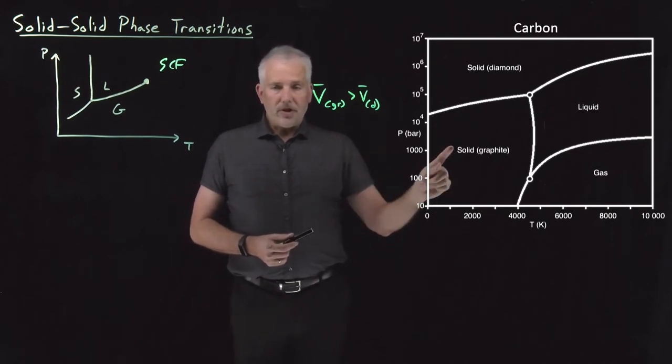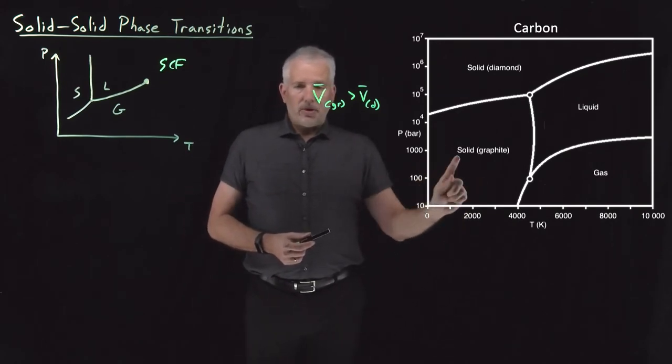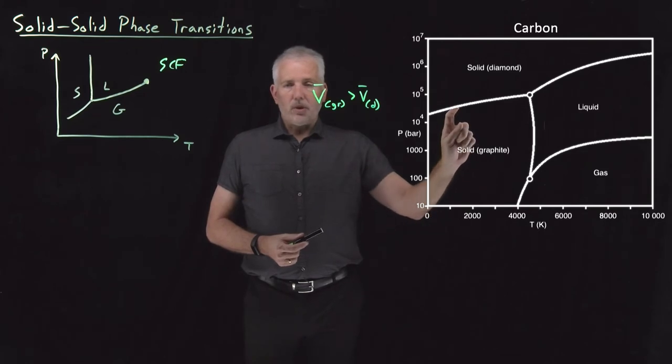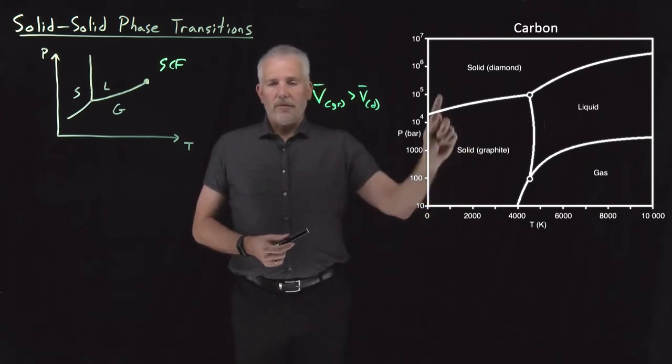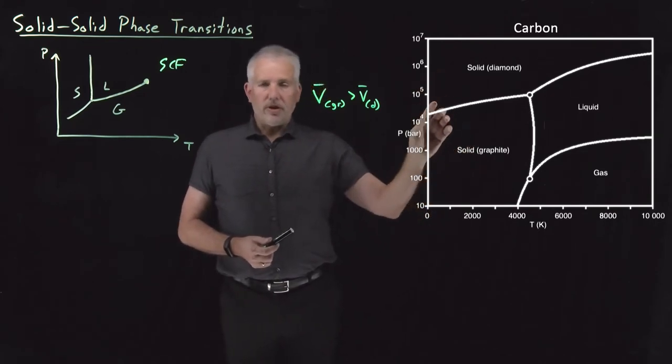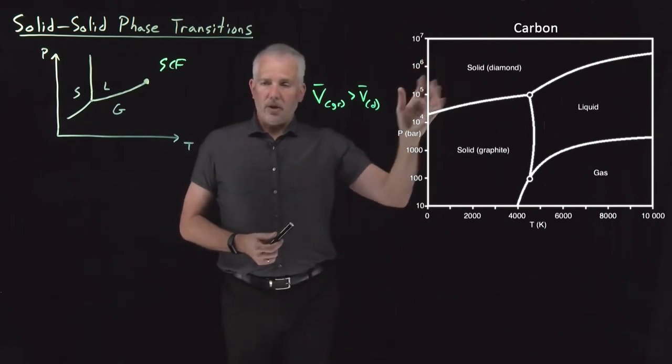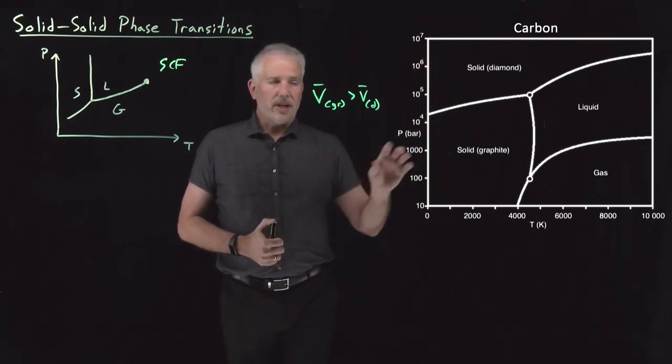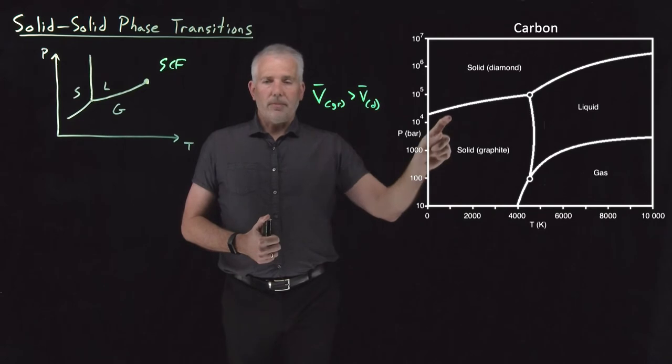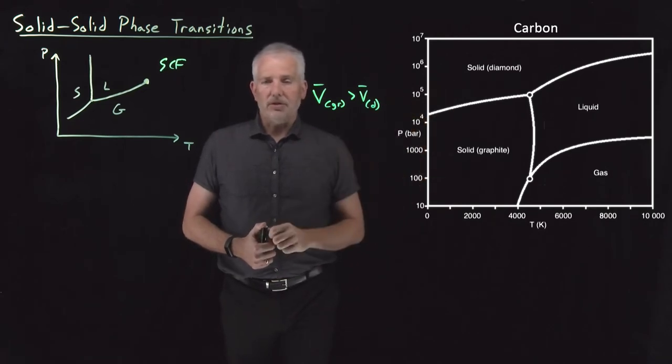What that means is eventually, no matter what the temperature is, eventually, as we increase the pressure, we'll eventually be able to convert graphite into diamond. Again, you likely knew that diamonds get formed in the earth, typically at high pressures and relatively high temperatures, where graphite can be compressed to high pressures to form diamond.